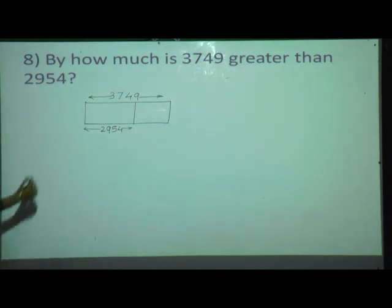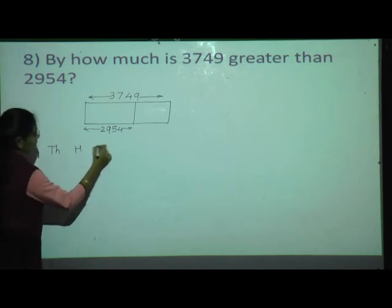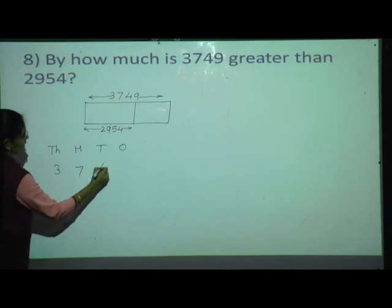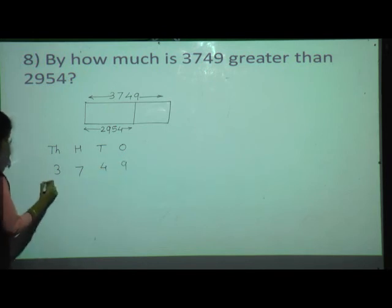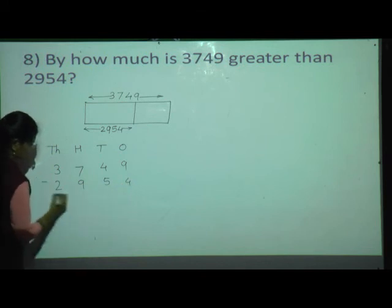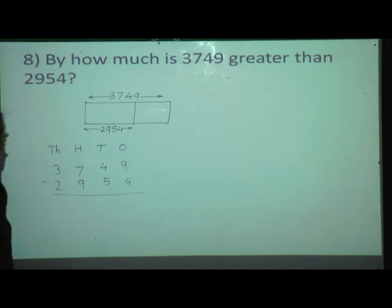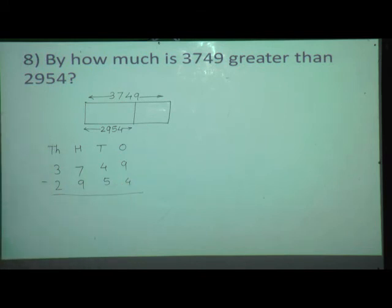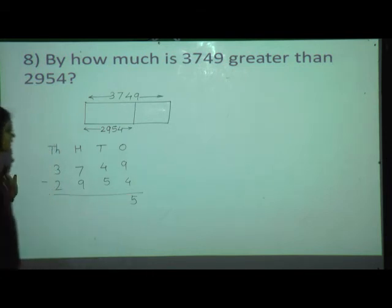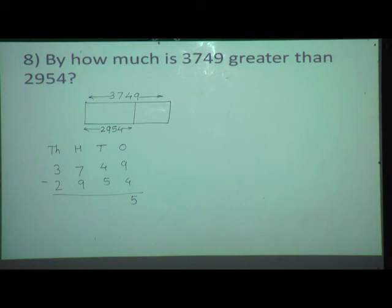That subtracted value is our answer. So do the subtraction. This is a 4-digit number, so put the numbers in the place value chart: 3,749 minus 2,954. See the ones place: 9 minus 4. What is 9 minus 4? It equals 5.